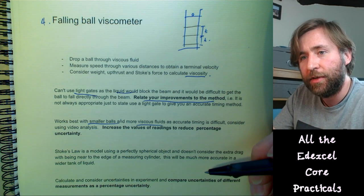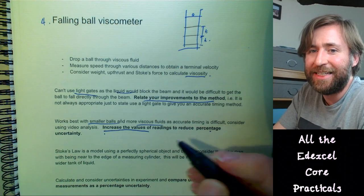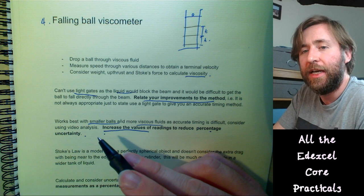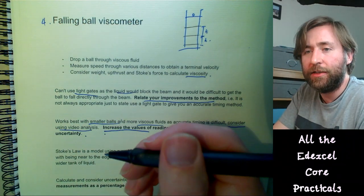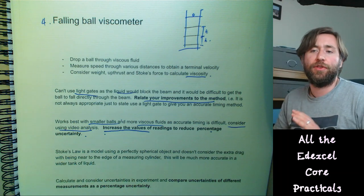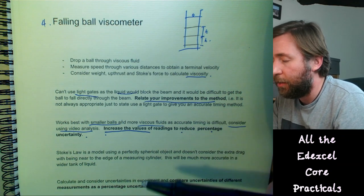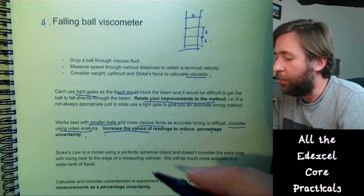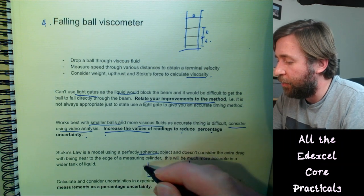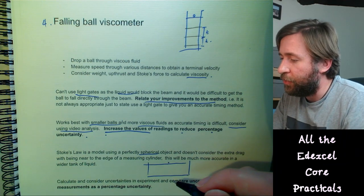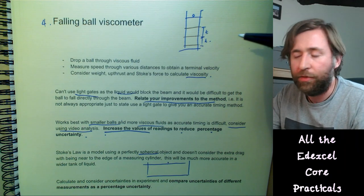It works best with smaller balls and more viscous fluids because they fall slower, which — counterintuitively — is the case for smaller balls. You can increase the values of readings to reduce the percentage uncertainty. You can also consider using video analysis with slow-motion frame-by-frame playback to get more accurate timing measurements. Stokes' law models a perfectly spherical object, and extra drag near the edge of the measuring cylinder is an issue — a wider tank reduces this effect.